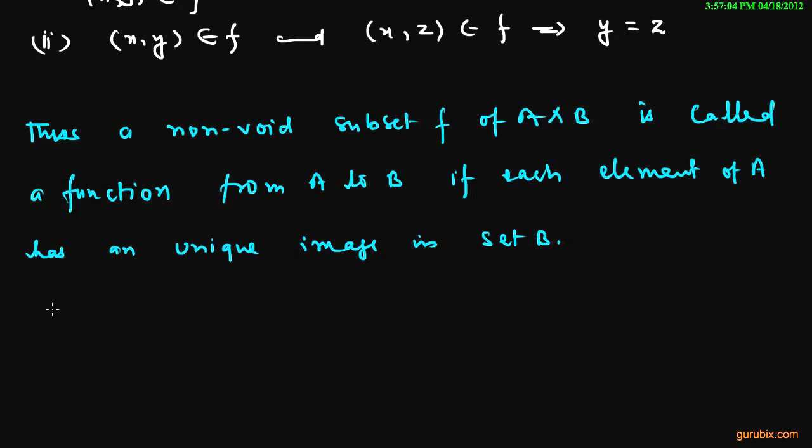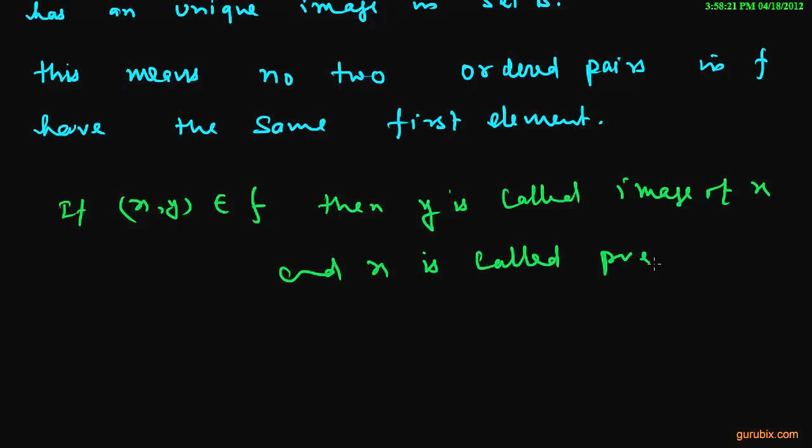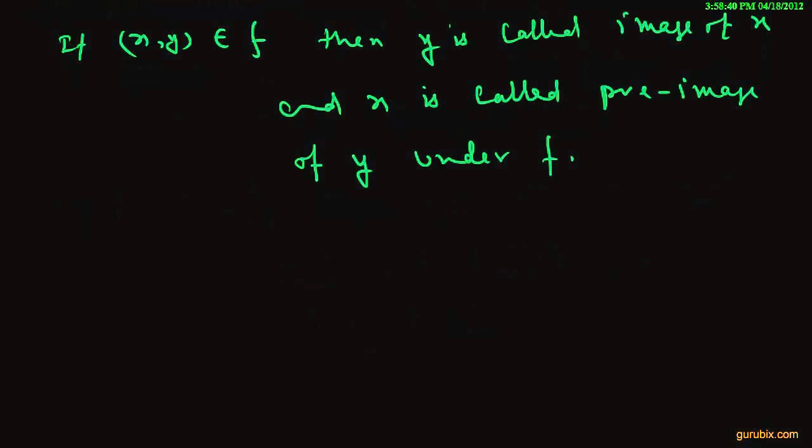This means no two ordered pairs in F have the same first element. And if xy belongs to F then y is called image of x and x is called preimage of y under F.